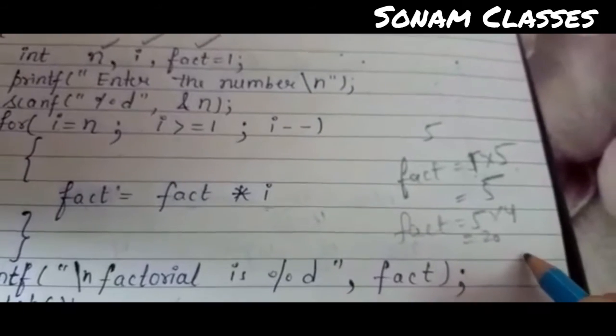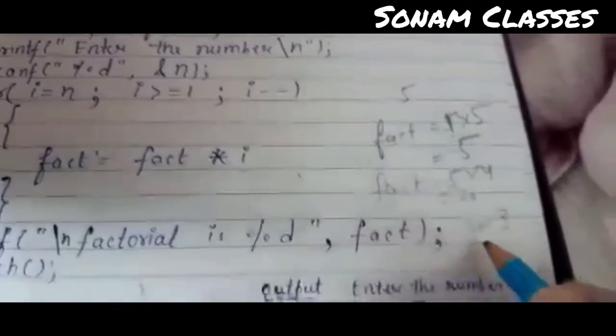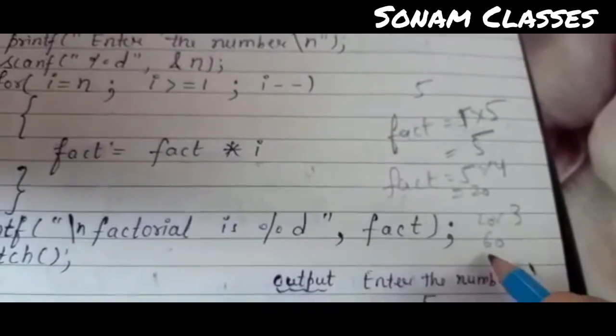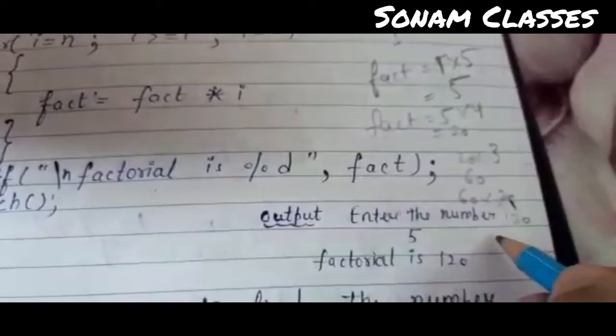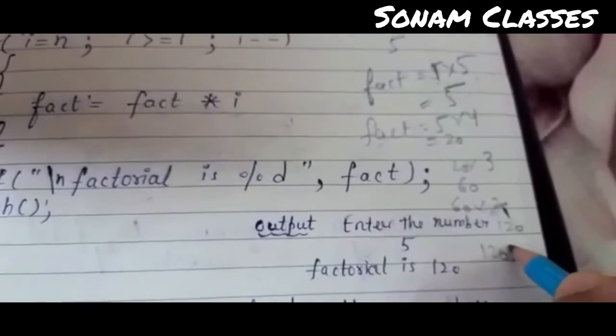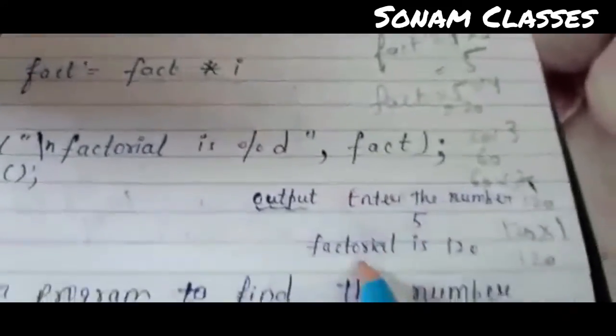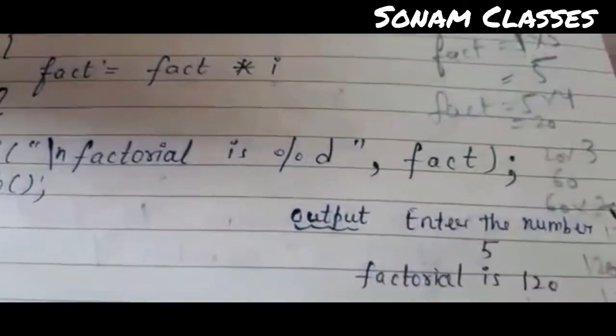Now i value is 3, factorial value is 20, how much will be? 60. Then we go back. Factorial value is 60, i value is 2, becomes 120. Then we go back. Factorial value is 120 and i value is 1, stays 120. Then it goes back into the loop. Enter the number 5, factorial is 120, completed.